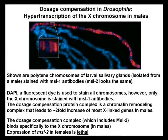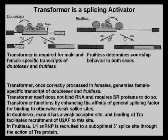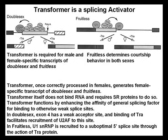Shown are polytene chromosomes of larval salivary glands isolated from a male, stained with MSL1 antibodies — MSL2 looks the same. DAPI, a fluorescent dye, is used to stain all the chromosomes; however, only the X chromosome is stained with MSL1 antibodies because that is where MSL1 localizes. The dosage compensation protein complex is a chromatin remodeling complex that leads to a two-fold increase of most X-linked genes in males. This dosage compensation complex, which includes MSL2, binds specifically to the X chromosome in males.